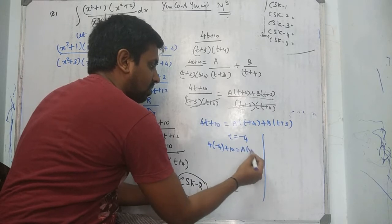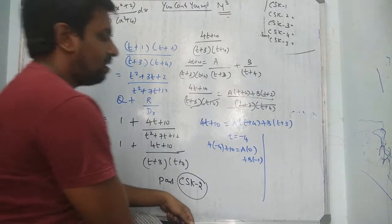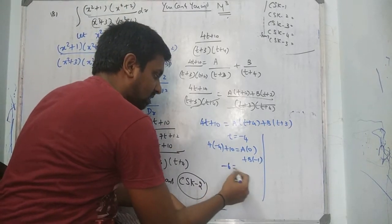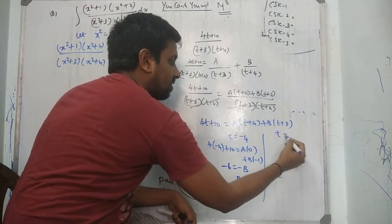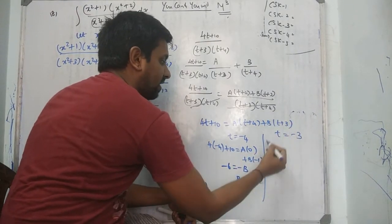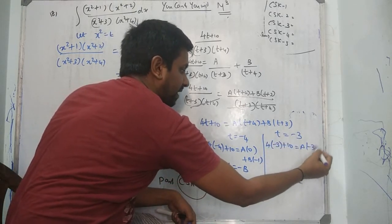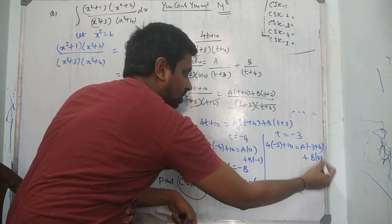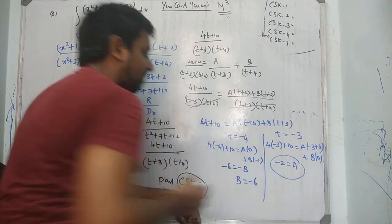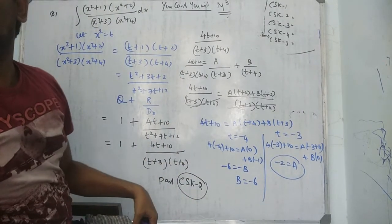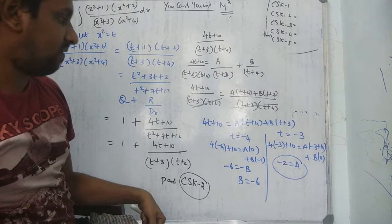Put t equal to minus 4: both sides give minus 16 plus 10 equals minus 6 equals B times (minus 4 + 3) equals minus B, so B equals 6. Put t equal to minus 3: we get 4 times minus 3 plus 10 equals minus 2 equals A times 1, so A equals minus 2. Therefore A equals minus 2 and B equals 6.